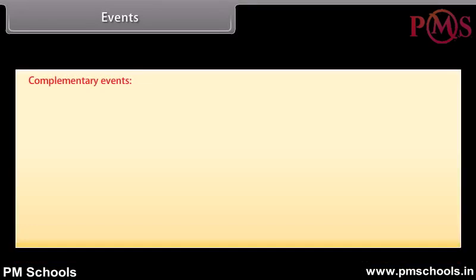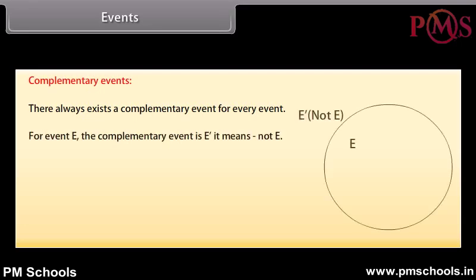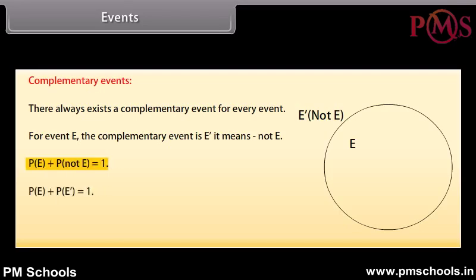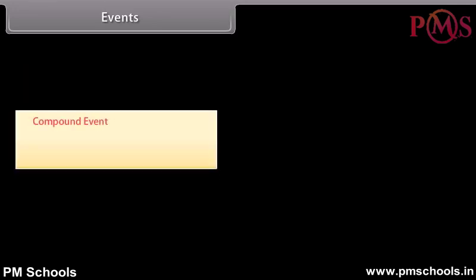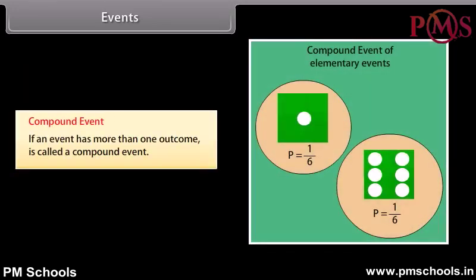Complementary events: There always exists a complementary event for every event. For event E, the complementary event is E̅ — it means 'not E'. Probability of E plus probability of not E equals 1. Therefore, probability of not E is equal to 1 minus probability of E. Compound event: An event that has more than one outcome is called a compound event.